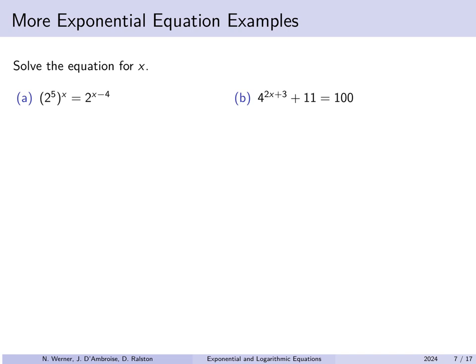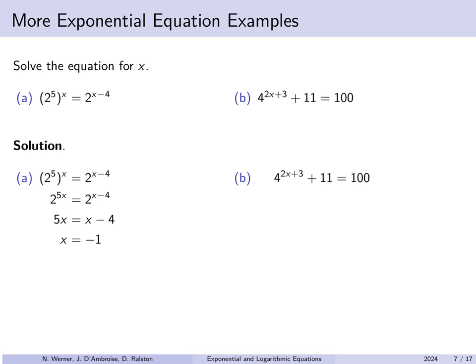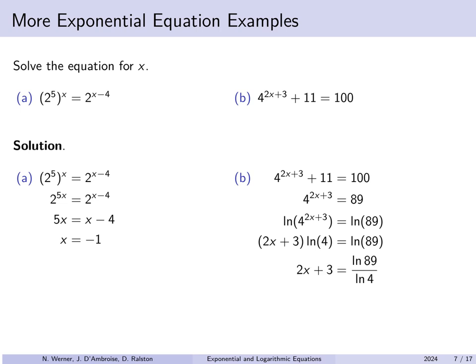Solve both for x: (a) 2^(5^x) = 2^(x-4), and (b) 4^(2x+3) + 11 = 100. For (a), using properties of exponents, 2^(5x) = 2^(x-4). Since exponential functions are one-to-one, 5x = x - 4, so x = -1. For (b), subtract 11 from both sides to get 4^(2x+3) = 89. Since we now have an exponential equal to a constant, take the natural log of both sides: (2x+3)·ln(4) = ln(89). Divide by ln(4), then subtract 3 and divide by 2 to solve for x.